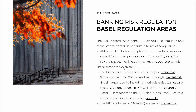Just a very short history lesson. The first version of Basel, retroactively known as Basel I, focused simply on credit risk. The goal was to protect the typical business of banks. It was simplistic in terms of weights and had limited risk sensitivity.